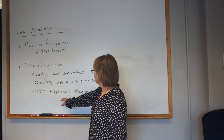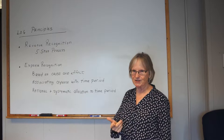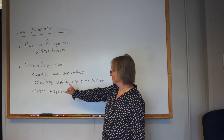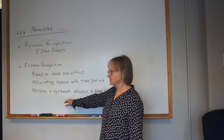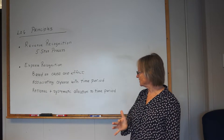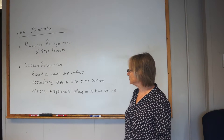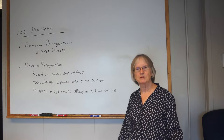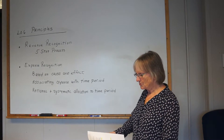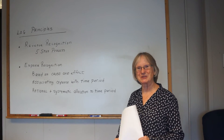The third method is a rational and systematic allocation to a time period. What should come to mind immediately is depreciation, amortization, and depletion. There's no direct association with the product — say the toaster that was sold — but you use some method of depreciation to systematically allocate the costs of your equipment over the period that is benefited. Prepaid rent is another example, allocated over the period the rent covers. Those are your revenue recognition principle and expense recognition principle.